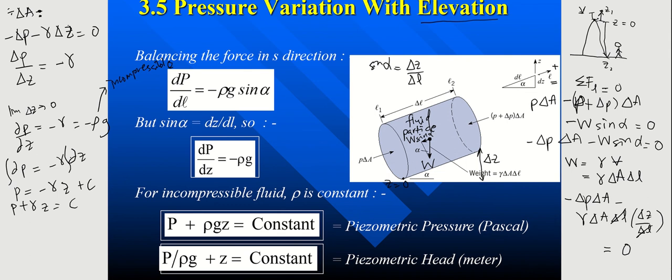And if you want to express pressure in meter, sometimes you can also express pressure in meter. It's called head. So if you want to express piezometric pressure in piezometric head, which is in meter, you just divide with gamma or rho G. So you get in meter.